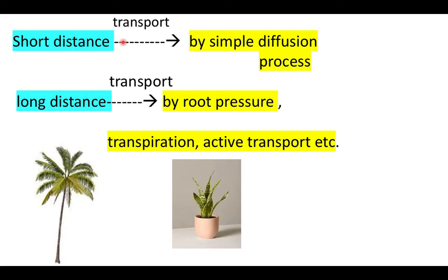Short distance transport occurs between the non-green part (roots) and the green part (shoot) when the distance between them is very small — transport in that case is by simple diffusion. But if the distance between the non-green part and the green part is large, simple diffusion is not sufficient, so plants use other mechanisms.